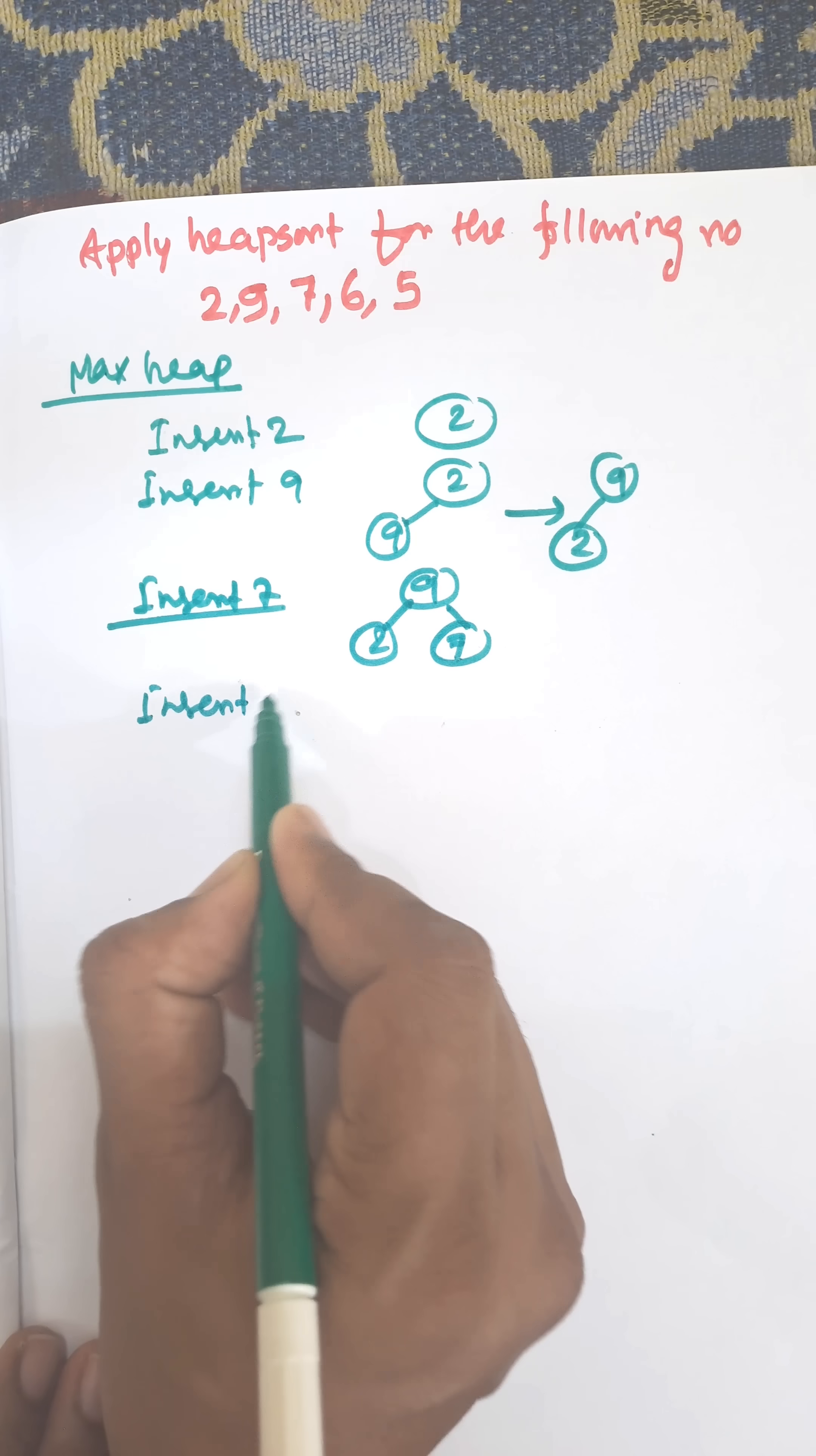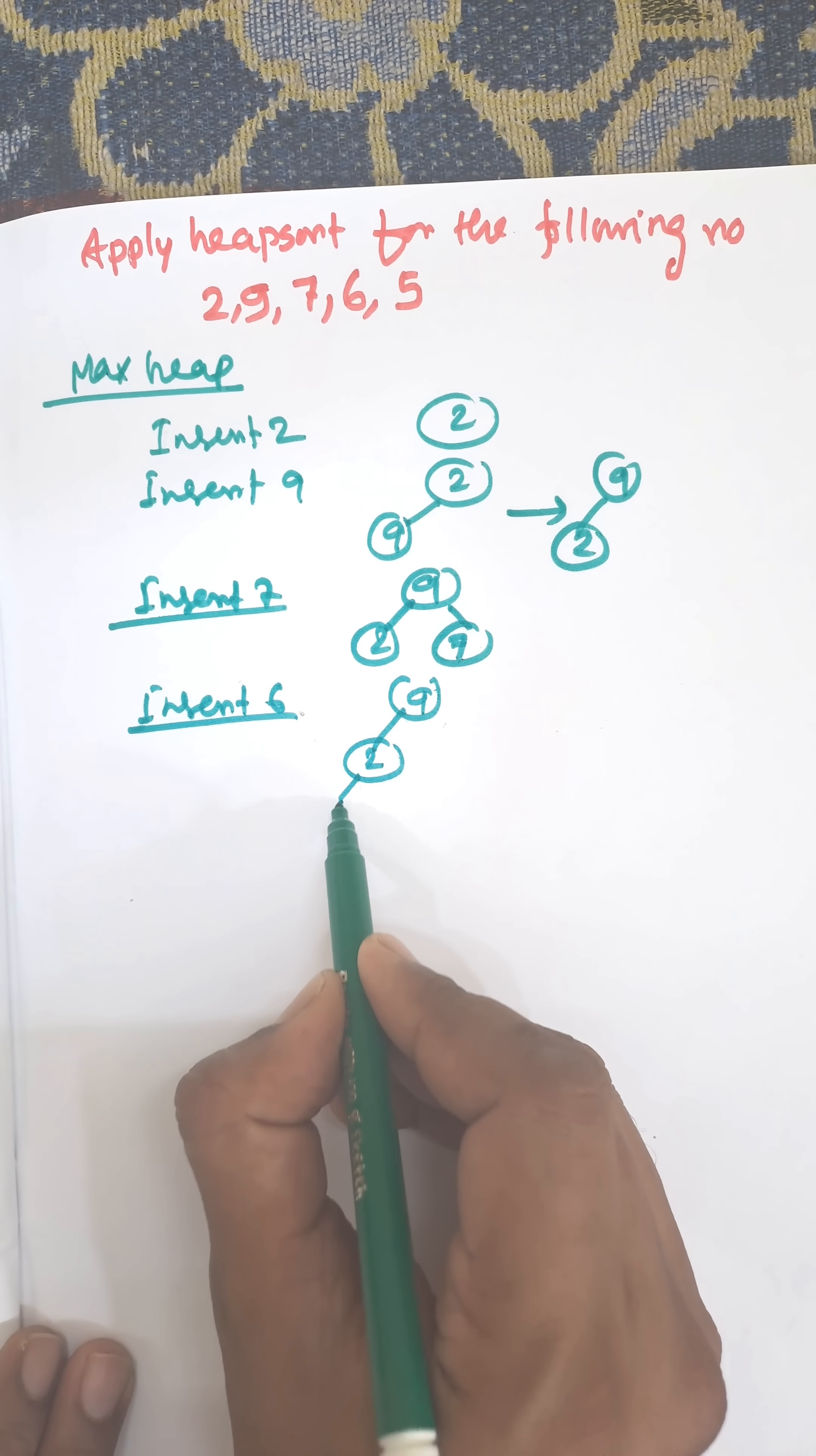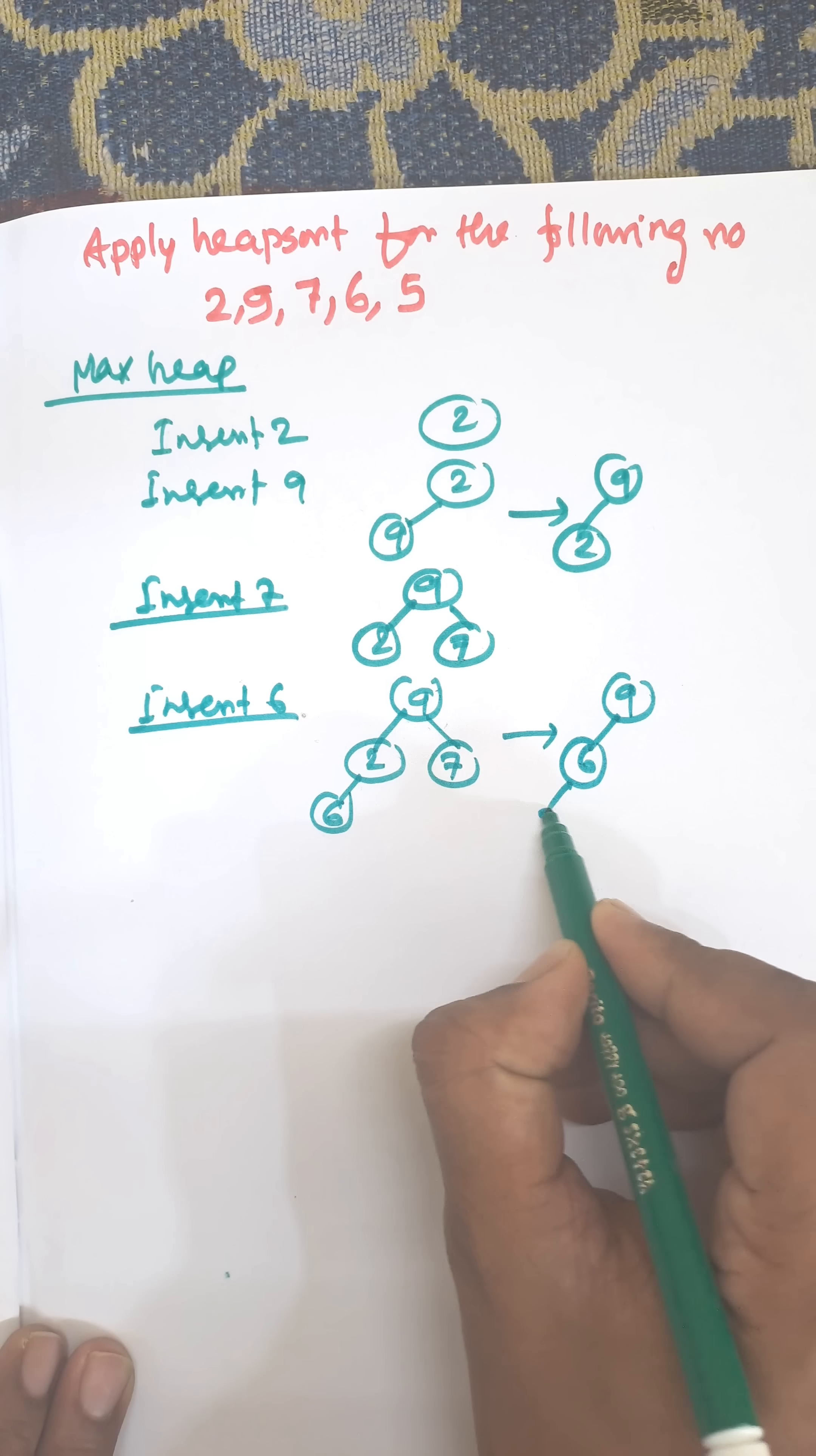Now insert 6. 6 will be the first left child of 2. As 6 is greater than 2, they are swapped to each other. 9, 6, and 2.